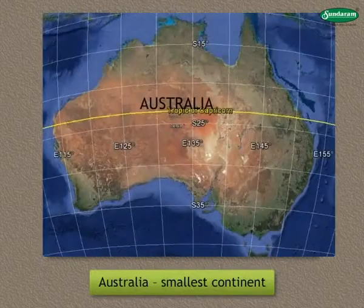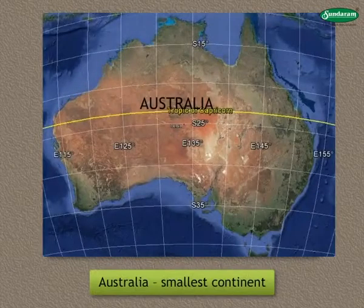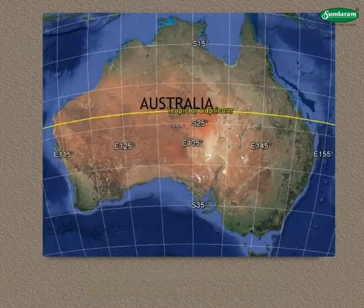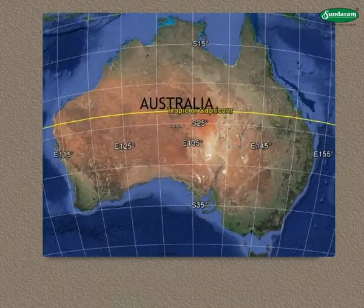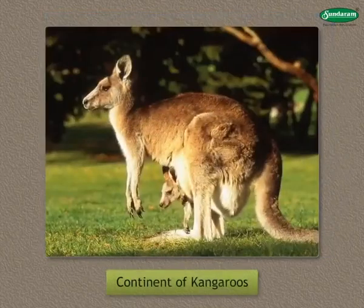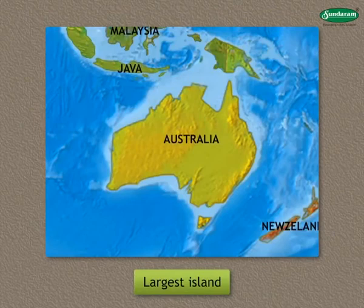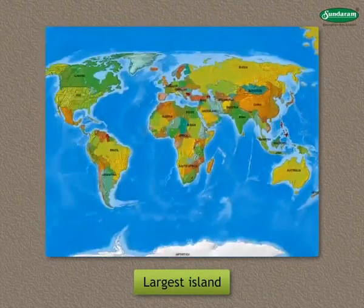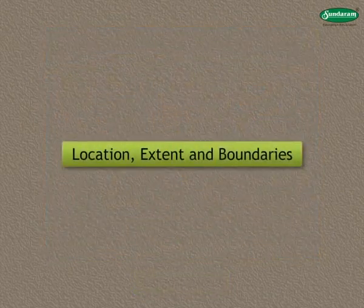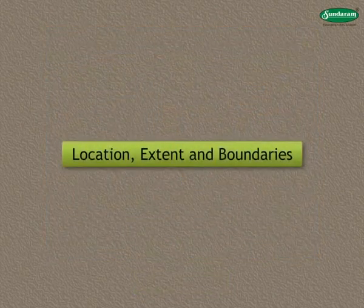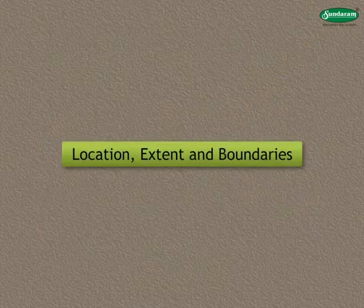Australia is the smallest continent in the world. It is also known as the continent of kangaroos. It is the largest island in the world. Now, coming to its location, extent and boundaries.